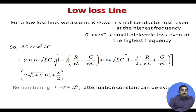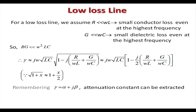Similarly, for small dielectric loss even at the highest frequency, G should be much less than ωC. This is why various coaxial lines have a certain usable frequency range — above that, this approximation does not hold. So the conditions for a low-loss line are: R << ωL and G << ωC.